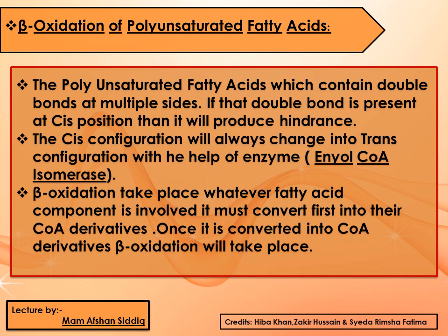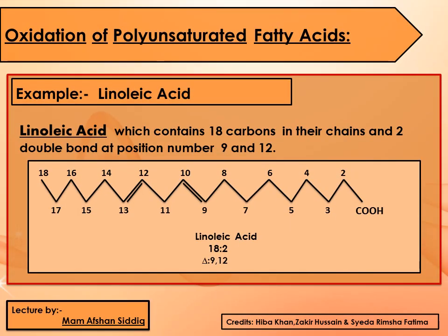The cis configuration will always be changed by the enoyl-CoA isomerase enzyme. Keep in mind that whenever beta oxidation takes place, whatever fatty acid component is involved must first be converted into its CoA derivative. Once it is converted into the CoA derivative, then beta oxidation will take place.